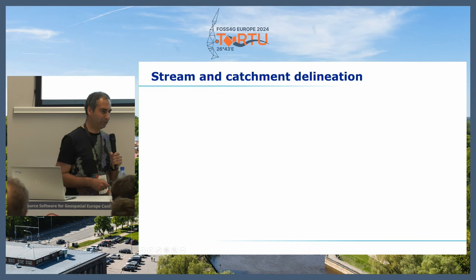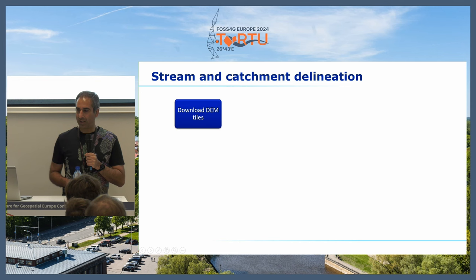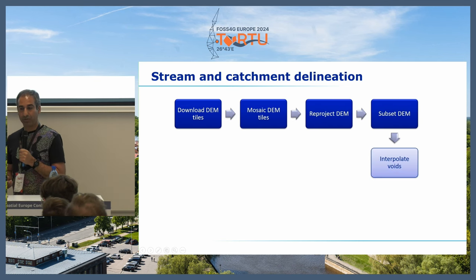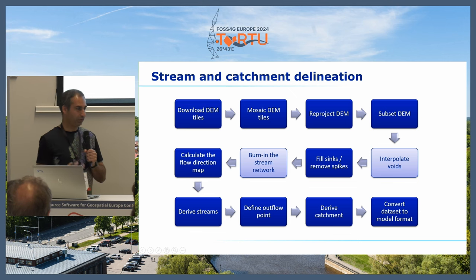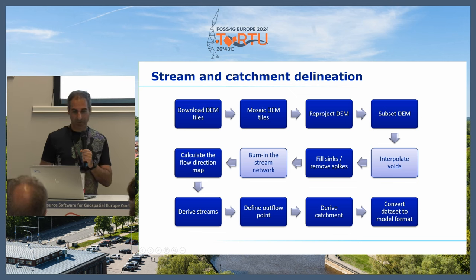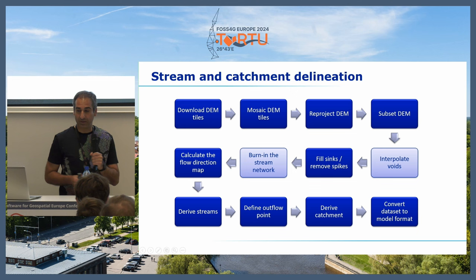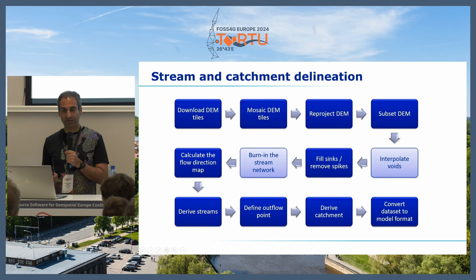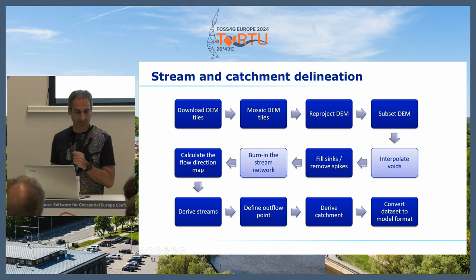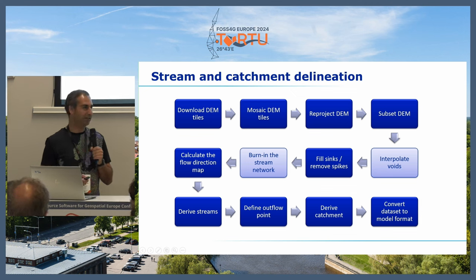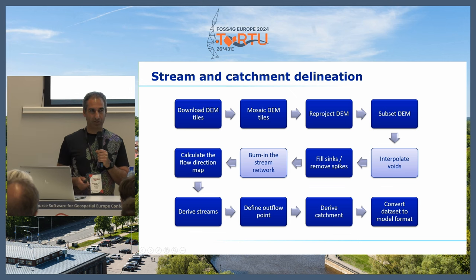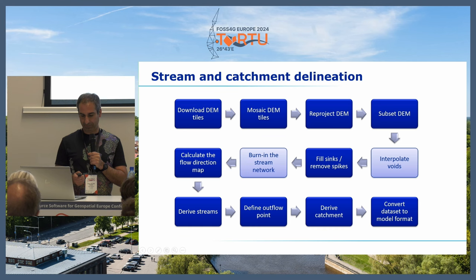Back to what hydrologists often need to do: stream and catchment delineation. Independent of the software, there are certain steps you need to follow. Of course you need a digital elevation model. You need to put tiles together, fill the sinks and remove spikes, calculate the flow direction, derive the streams, define your outlet on the derived stream because you're making a model, and then finally derive the catchment. I'm going to guide you through the choices you have in QGIS for doing all this.